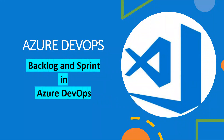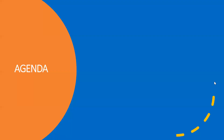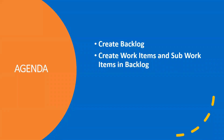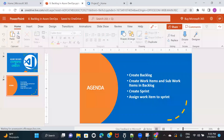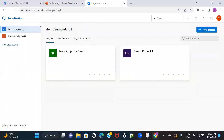Hi everyone, welcome back to another session of Azure DevOps training. Let's quickly go ahead and have a look at the agenda for the session. We are going to start by creating a backlog, see how to assign work items and sub work items in a backlog, create a sprint, and then moving forward, assign work items to a sprint.